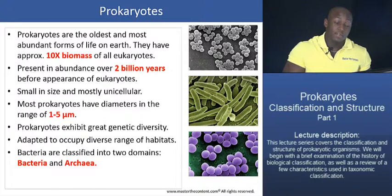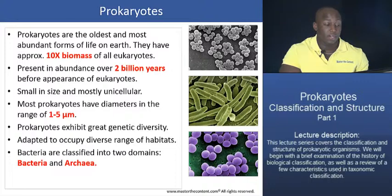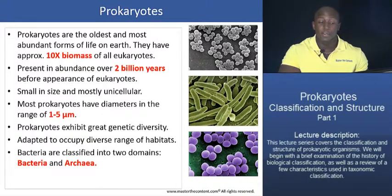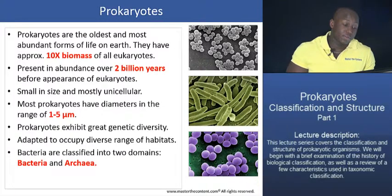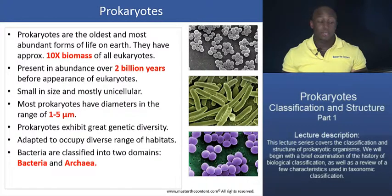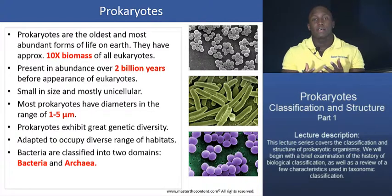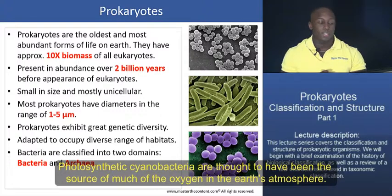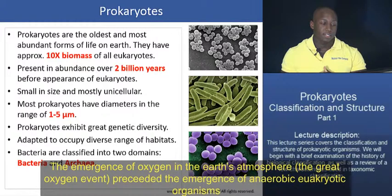Prokaryotes have been present through most of evolutionary history. They are believed to have existed over two billion years before eukaryotes appeared. Photosynthetic cyanobacteria are actually thought to have preceded the emergence of eukaryotic organisms by producing oxygen, which allowed those organisms to evolve and come into play.